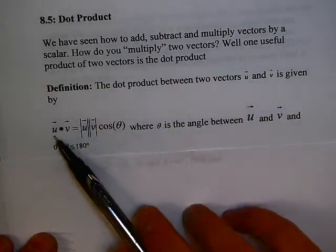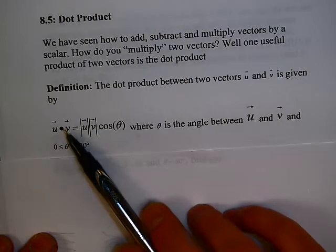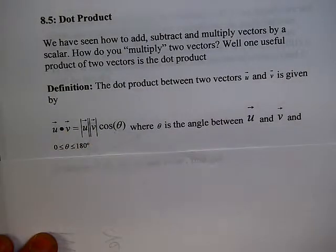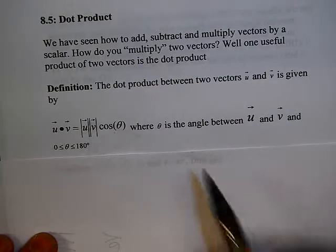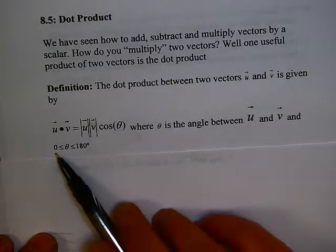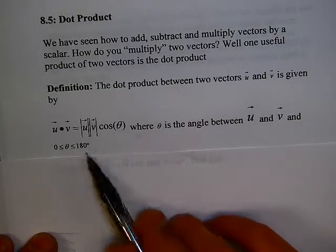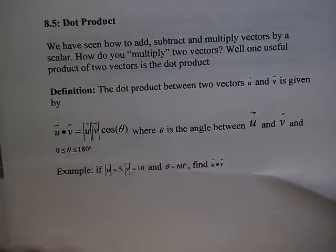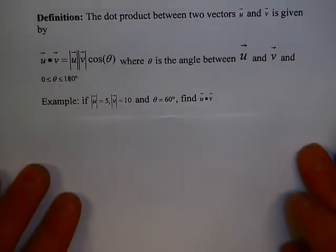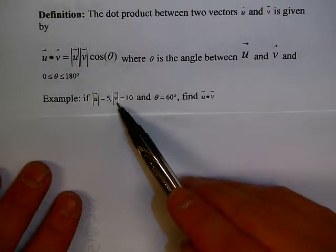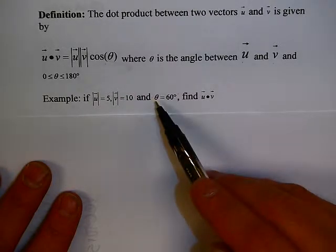One useful product is called the dot product, and it is given by this definition. The dot product between two vectors u and v is given by u dot v equals the magnitude of u times the magnitude of v cosine theta, where theta is the angle between u and v, and theta is between 0 and 180 degrees.